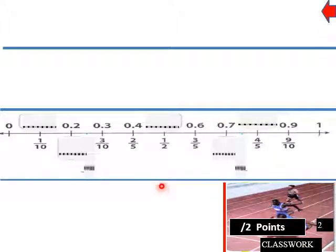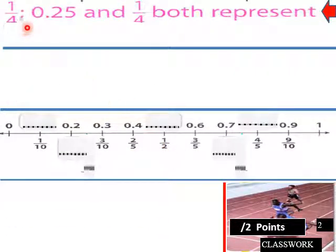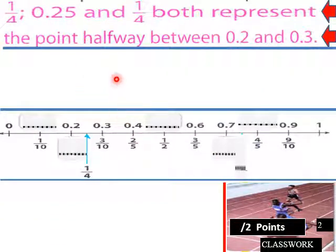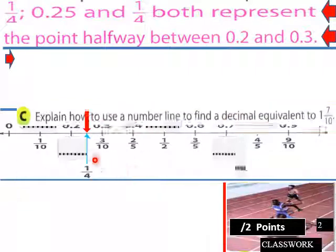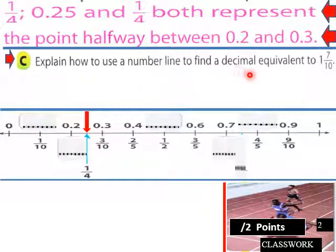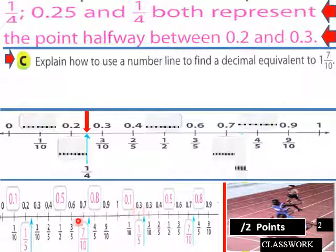On another number line: 0.25 and one fourth both represent the point halfway between 0.2 and 0.3. Now explain how to use the number line to find the decimal equivalent to one and seven tenths. How would you use a number line to find the decimal equivalent to this mixed number?